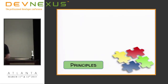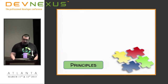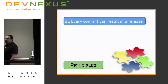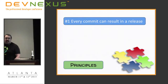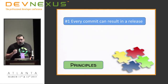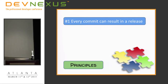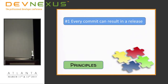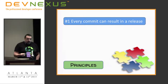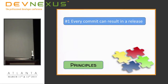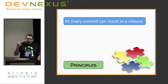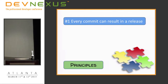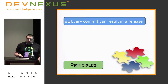Let's talk about some core building blocks and principles of continuous delivery. The first is that every commit can result in a release — not that every commit would result in a release, but that it can. At its most extreme, every commit could potentially be a release. Every time we check something into source control, we push it through our continuous delivery pipeline and validate whether it could actually be a release. If we choose to release it, we can. If not, we're accumulating a library of versions that could potentially be released, and then we release the most recent one we want, when we want.